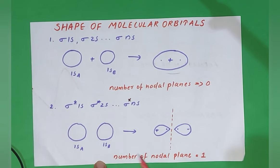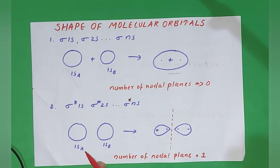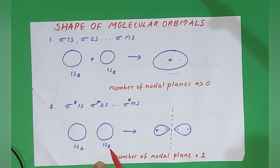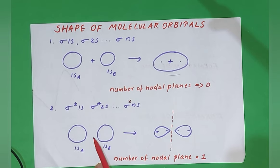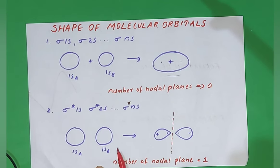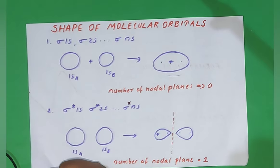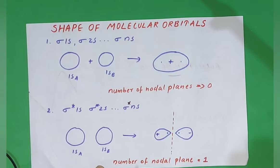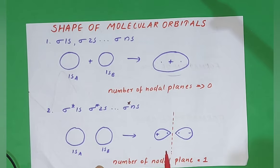The second is sigma star 1s, sigma star 2s, or generally sigma star ns. The formation is by destructive interference. The 1s atomic orbital of atom A and the 1s atomic orbital of atom B combine destructively — plus and minus combining, meaning opposite sign combination leads to destructive interference. A crest is positive and a trough is negative. Crest plus trough is destructive interference, which leads to the formation of a nodal plane.